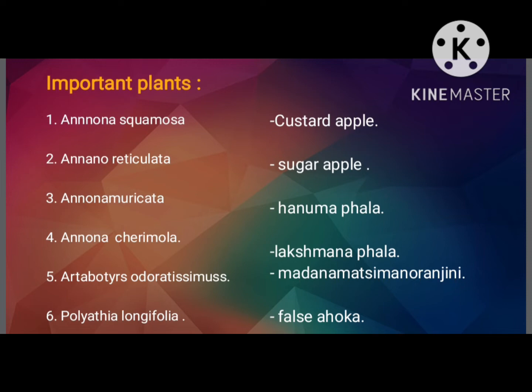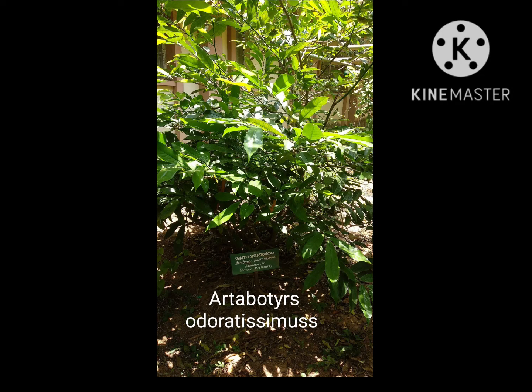Annona squamosa — custard apple, Sita phala. Annona reticulata — sugar apple, Rama phala. Annona muricata — Hanuma phala. Annona cherimola — Lakshman phala. Artabotrys odoratissimus — Madana manorangini. Polyalthia longifolia — false Ashoka. All of these are trees except Artabotrys odoratissimus, which is a climber.